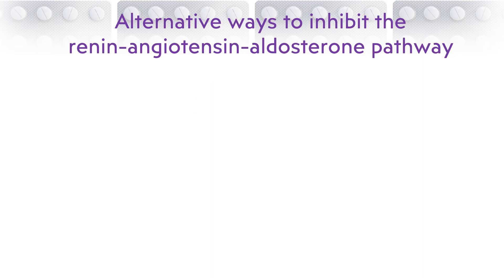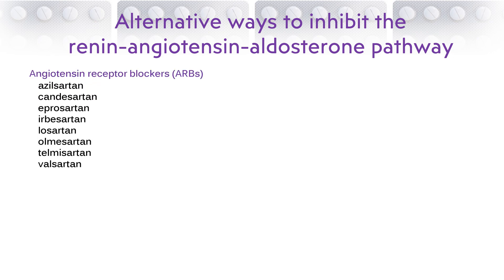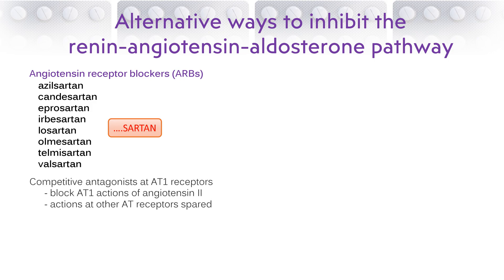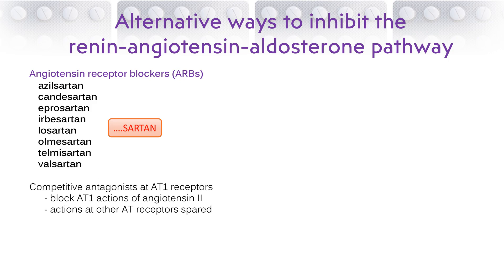Drugs can intervene at several points in the renin-angiotensin-aldosterone system. There are as many angiotensin receptor blockers as there are ACE inhibitors, and their names all end with -sartan, indicating a common action to block AT1 receptors. These drugs are competitive antagonists at AT1 receptors, competing with angiotensin 2 for binding, making it harder for angiotensin 2 to activate the AT1 receptor. This class of drugs is also widely used to treat hypertension and is prescribed as an alternative for patients that cannot tolerate ACE inhibitors due to side effects. They are as effective as ACE inhibitors.